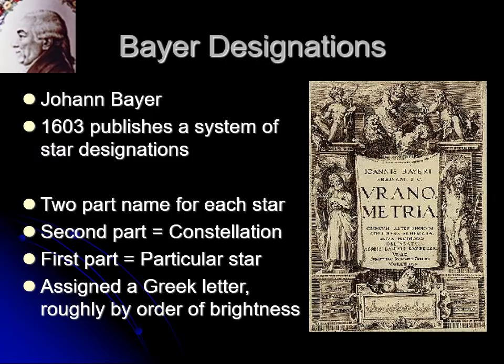We were talking about the Bayer designations of stars — a way of designating stars with a Greek letter and the constellation name. If you look on star charts, or even in Stellarium, clicking on a star gives you the Bayer designation if it's bright enough to have one. The problem is that you only have so many letters in the Greek alphabet.